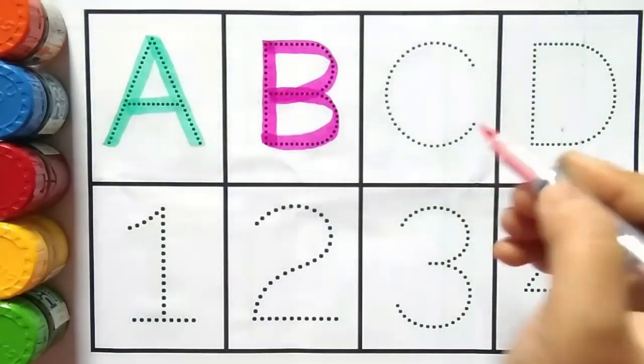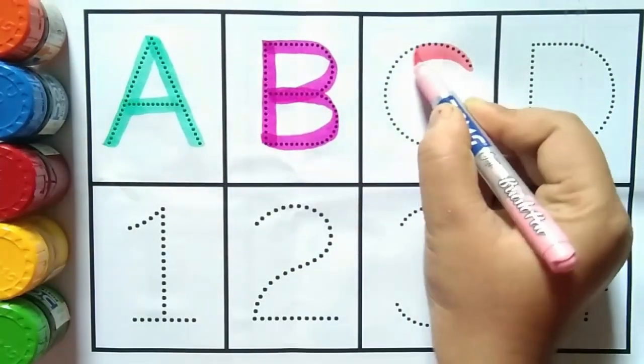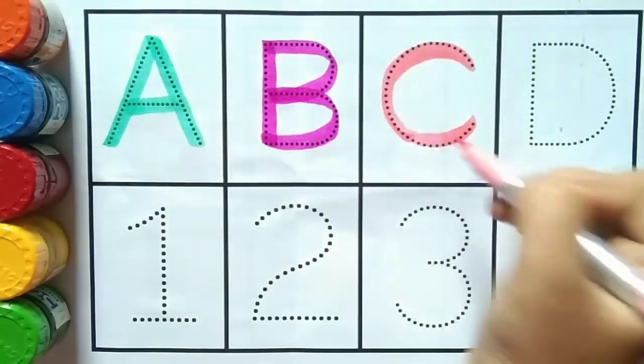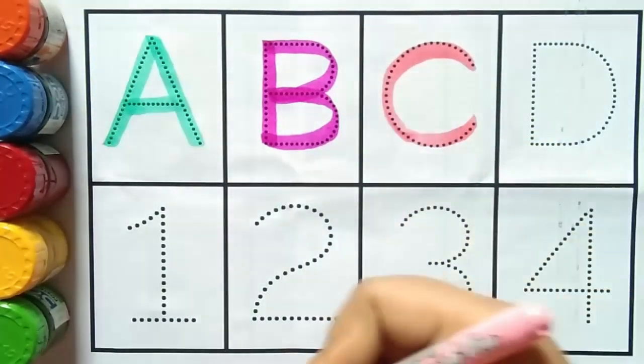After B comes C. C for calf. C for what kids? C for calf.